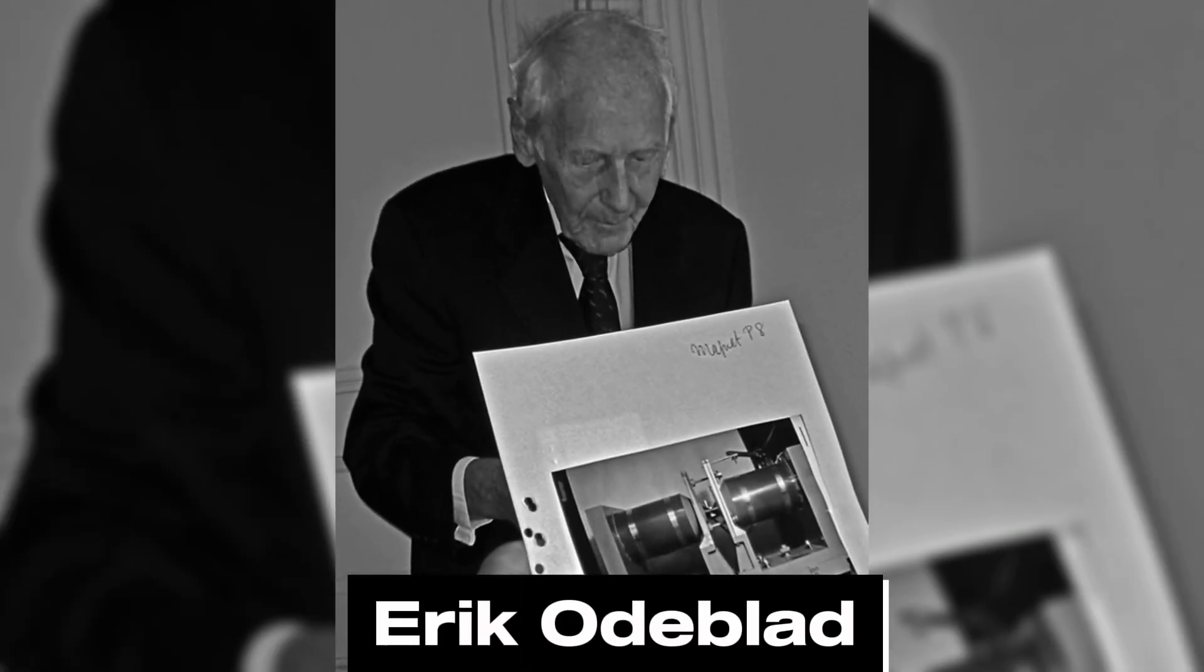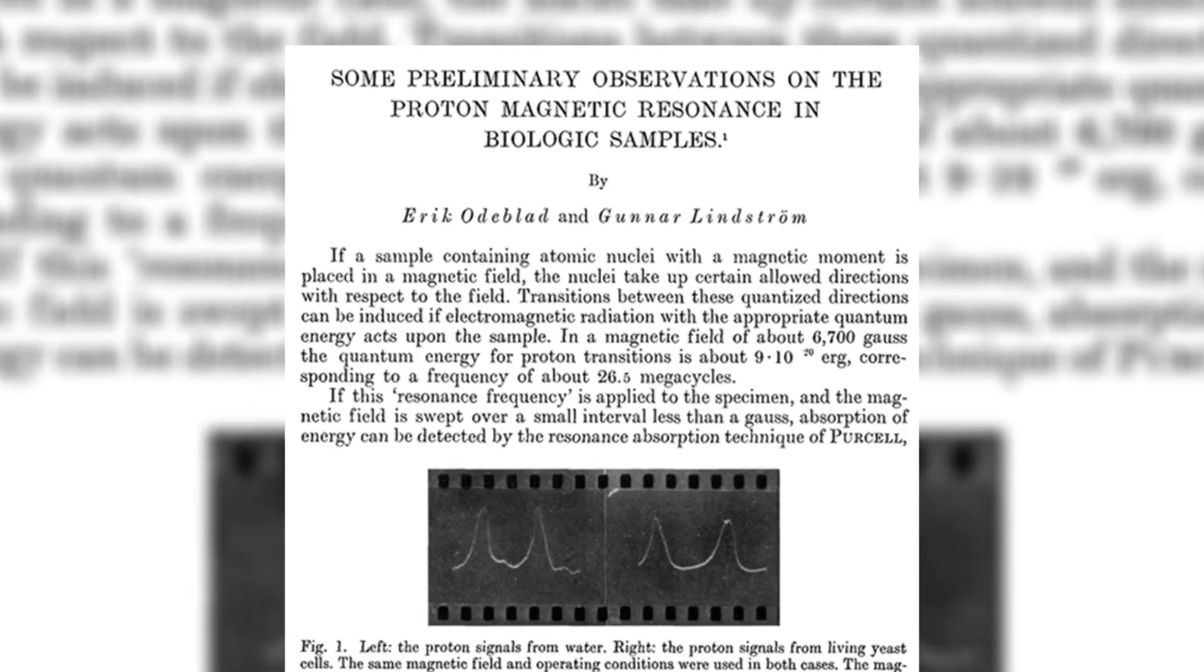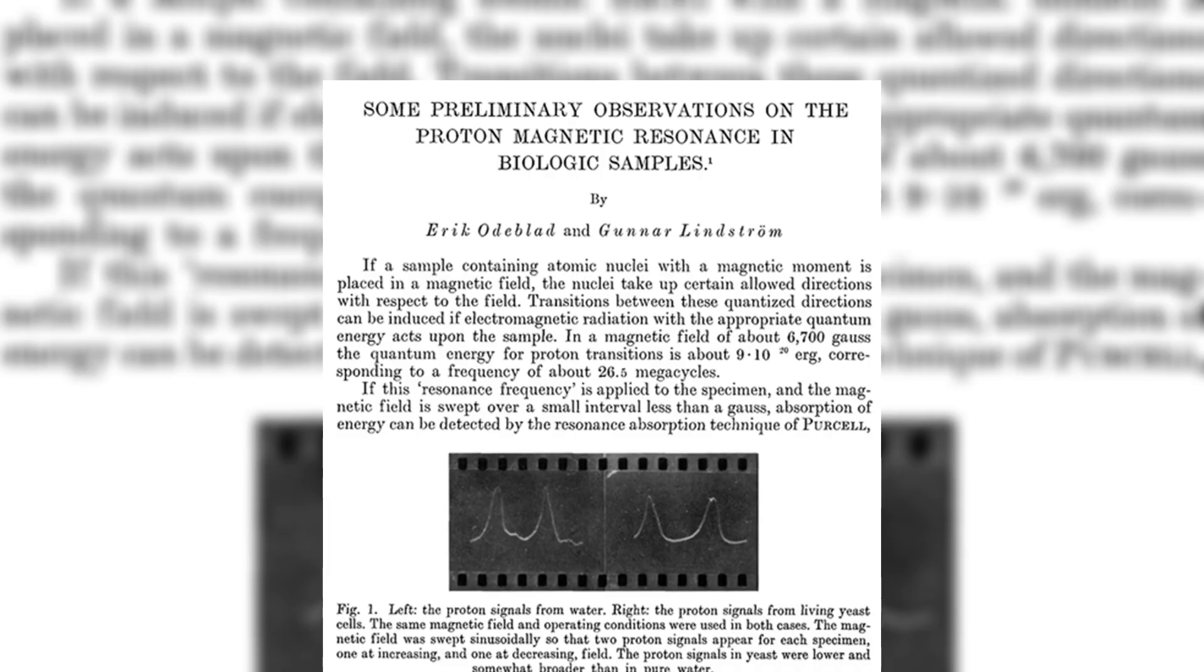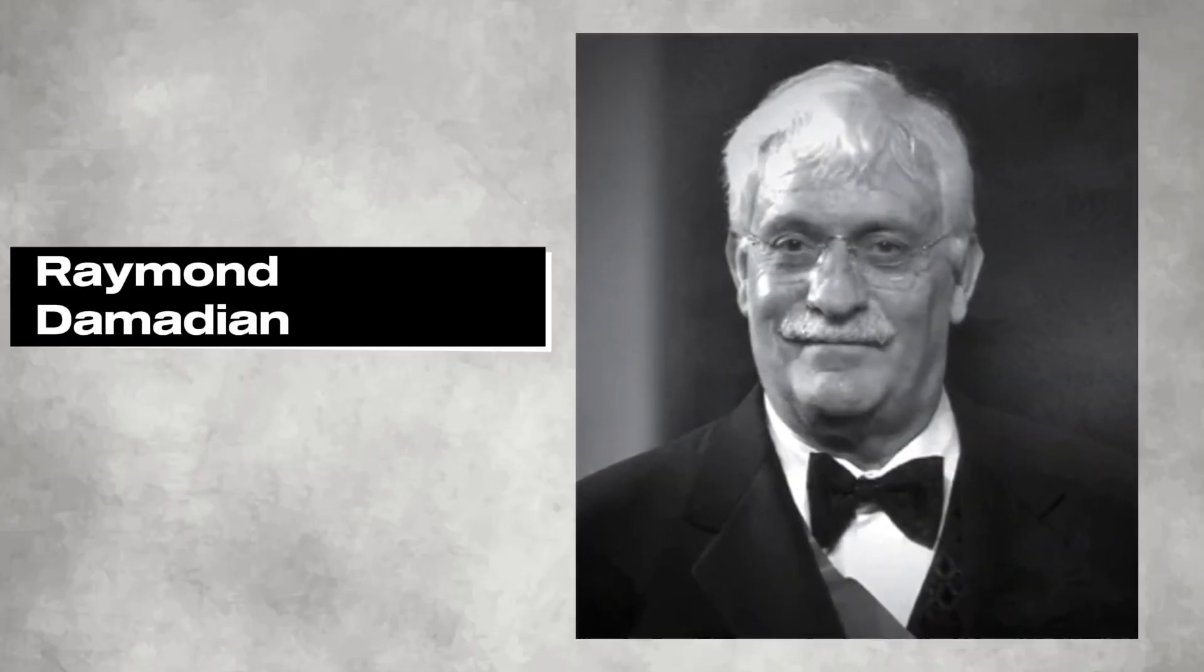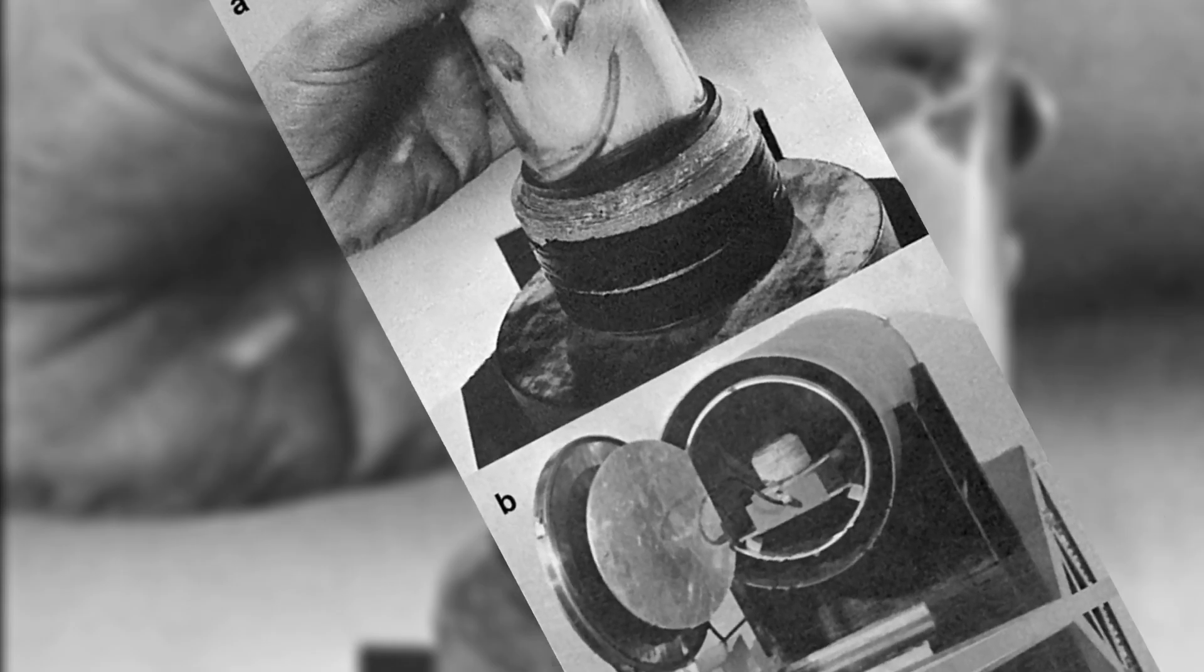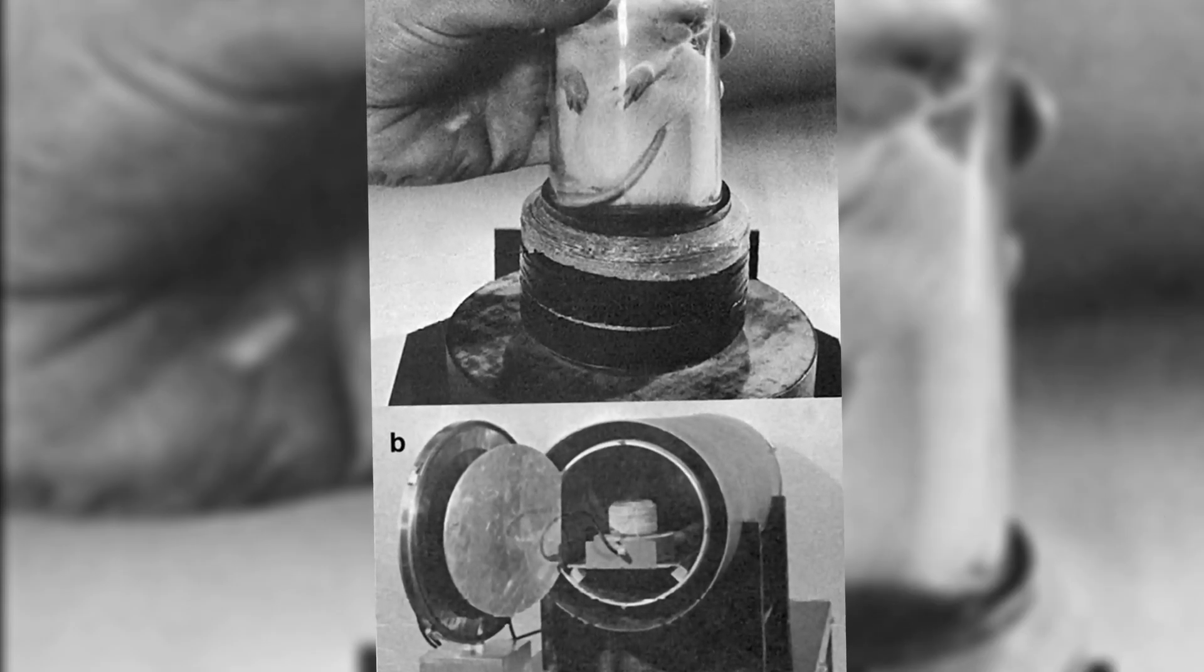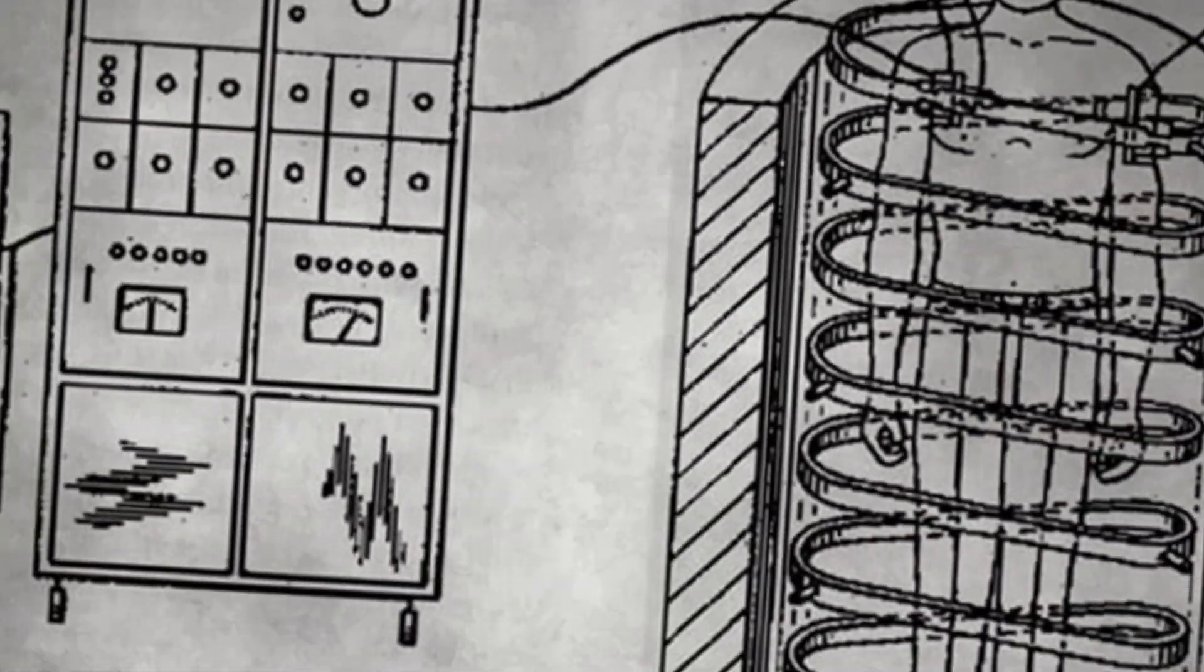Subsequent progress came from Swedish researchers Lindström and Odblad, whose insights into tissue responses to NMR expanded the possibilities of this technology. However, it was Dr. Raymond Damadian's groundbreaking demonstration in 1969 of MRI's potential to differentiate cancerous cells from healthy ones in rats that propelled the field forward. This milestone led to Damadian filing the first patent for MRI technology in 1972.